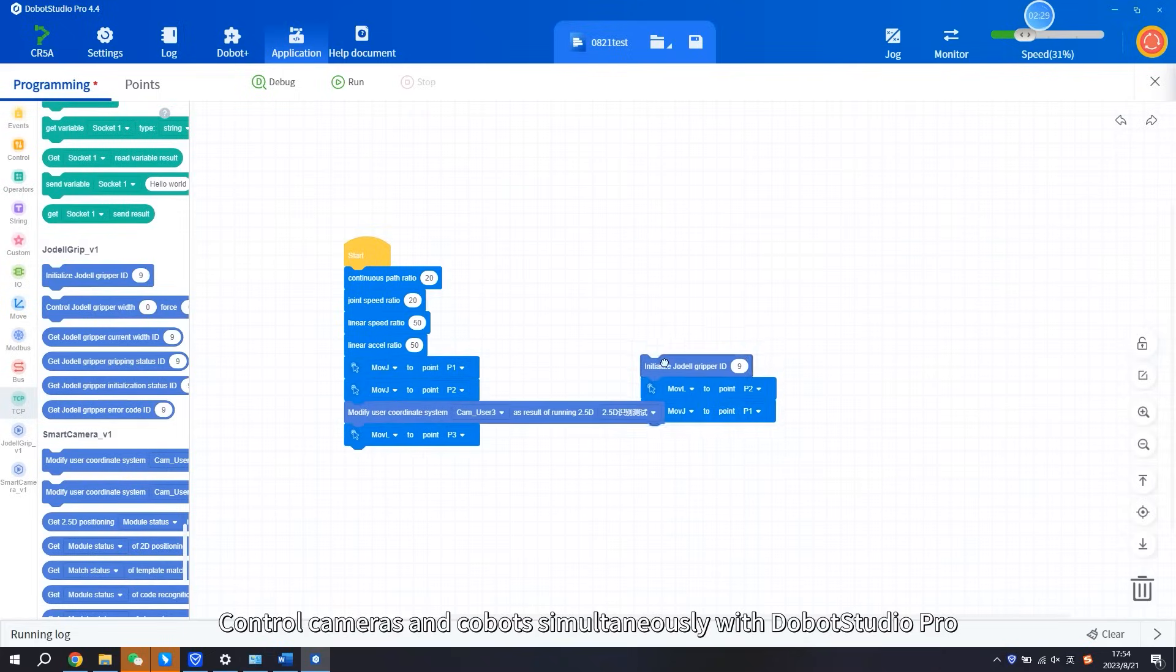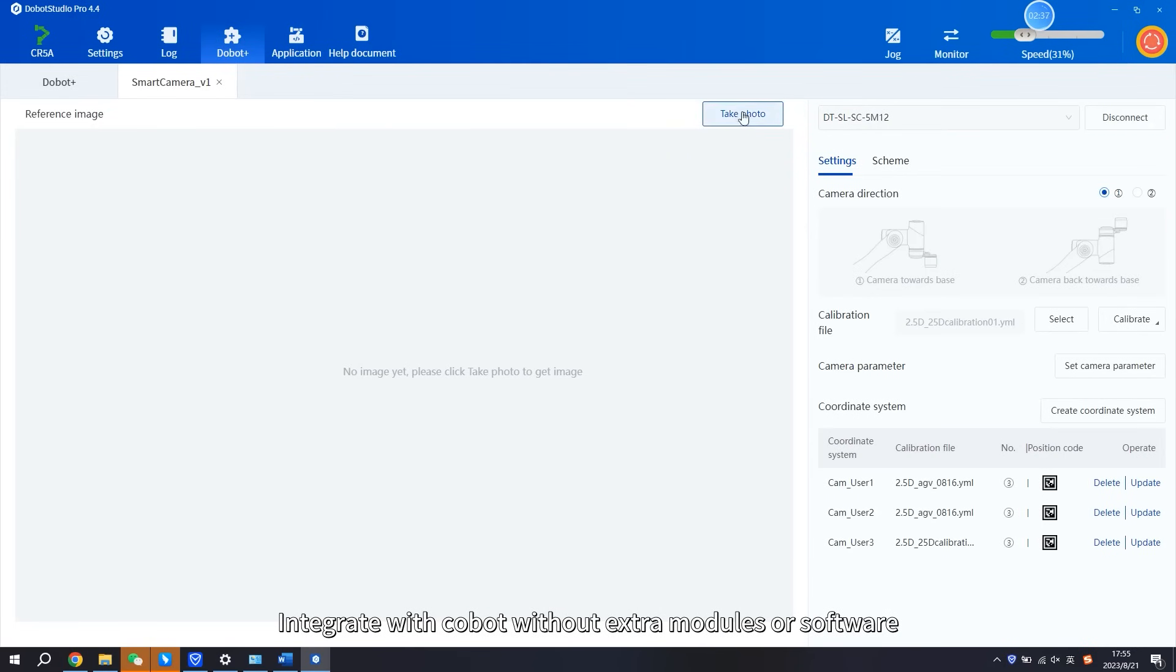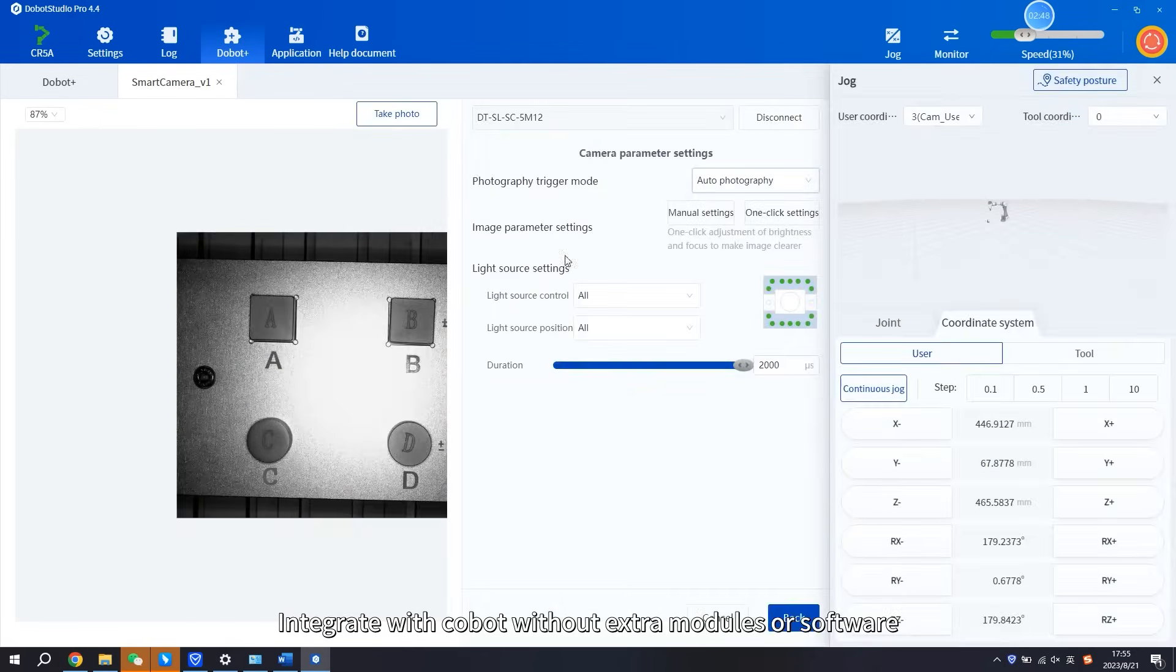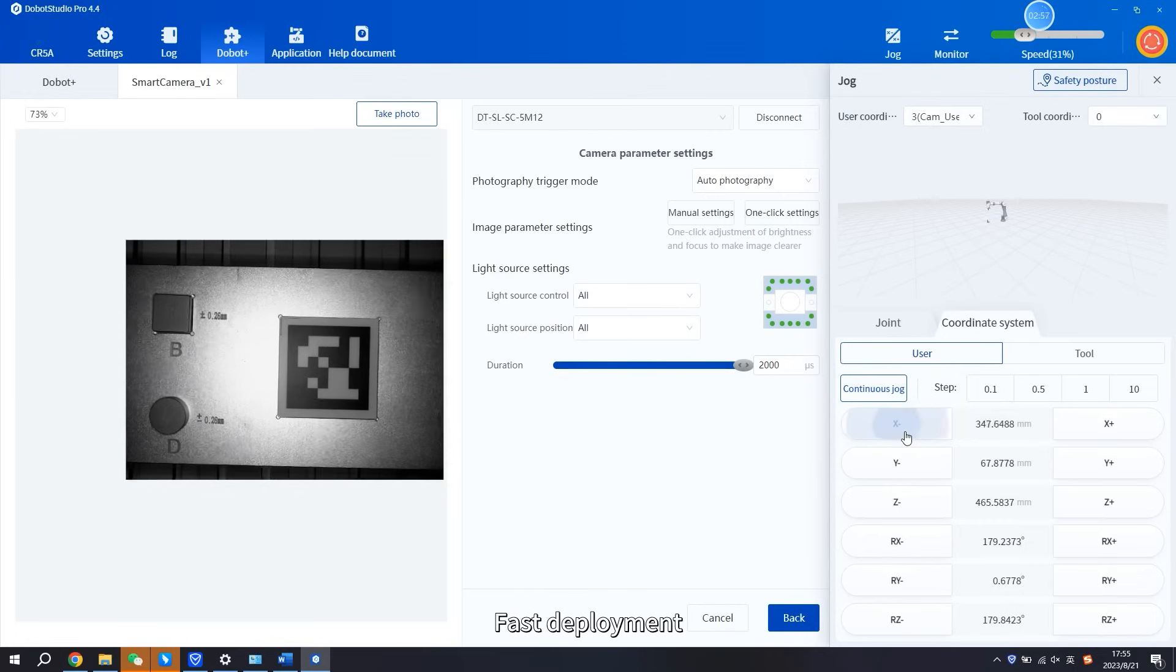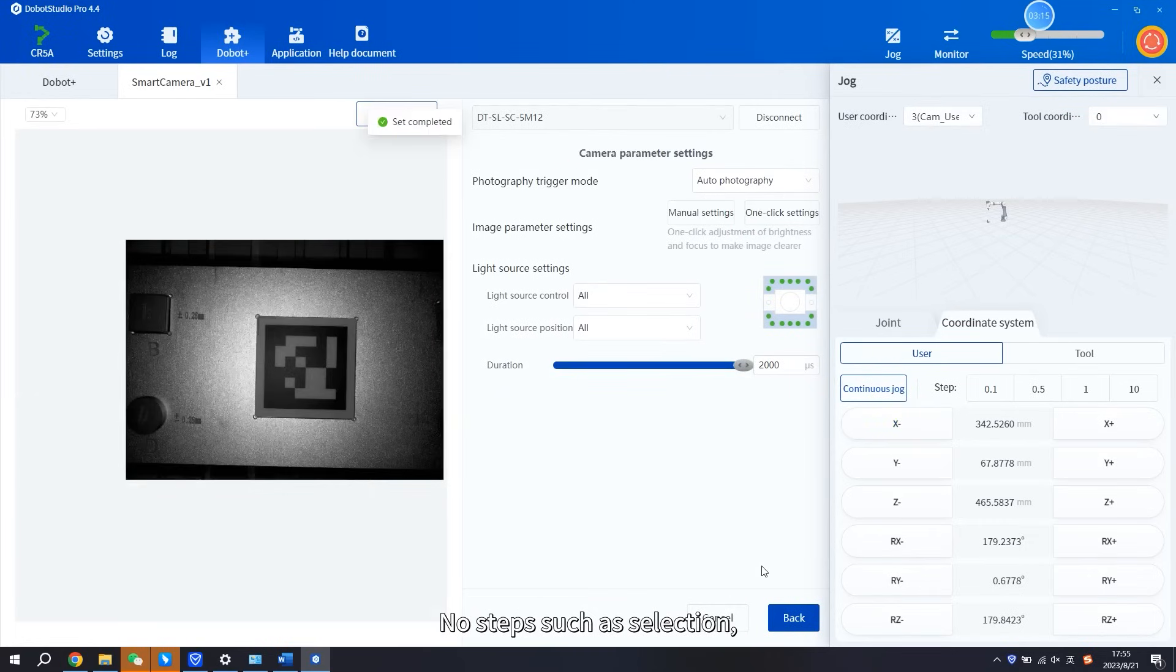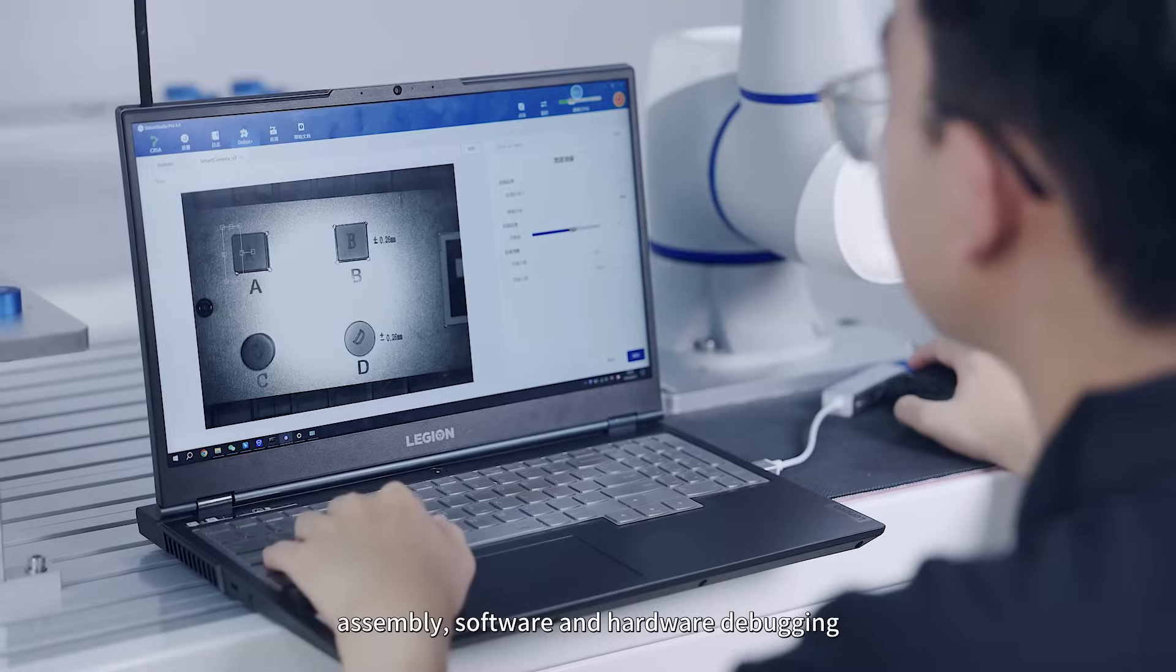Control cameras and Cobots simultaneously with Dobot Studio Pro. Integrate with Cobot without extra modules or software. Intuitive guidance. Fast deployment. No steps such as selection, assembly, software, and hardware debugging.